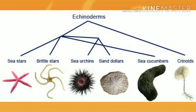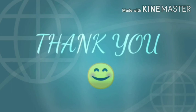Asexual reproduction is also found in Echinodermata. The types include fragmentation, regeneration, and fission — where the body is divided into two parts — and fragmentation refers to the reproduction of missing body parts. With that, larval forms in Echinodermata are now complete. Clear your doubts in the comment section below.